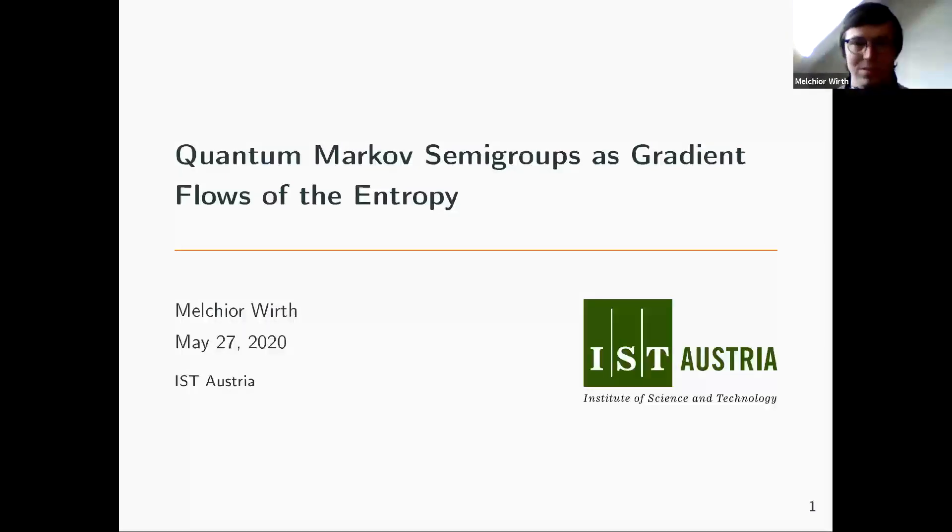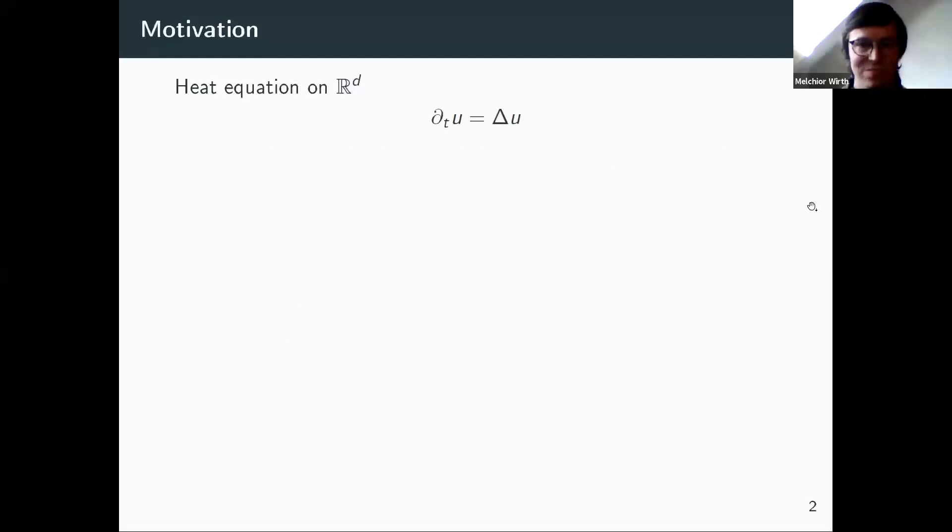I want to talk about quantum Markov semi-groups. Because we already had a few nice talks about this topic, especially the one by Marius Junge where he gave nice motivation for the whole Ricci curvature business, I want to keep my motivation rather short and jump directly into the technical part. Let's start with a very classical object, which is the heat equation on R^d.